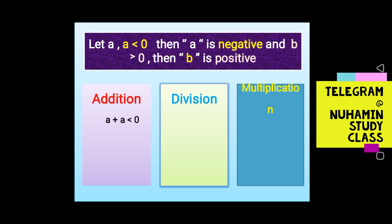If A is less than zero, then A is negative. If B is greater than zero, then B is positive. A is negative and B is positive means A is less than B.